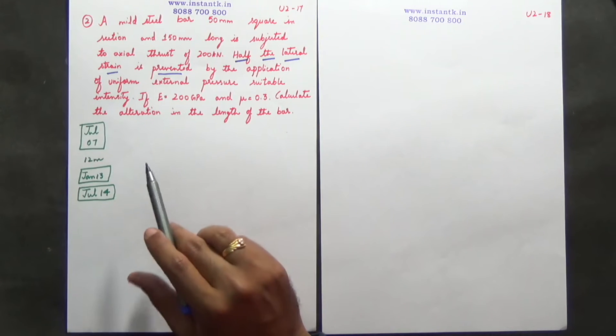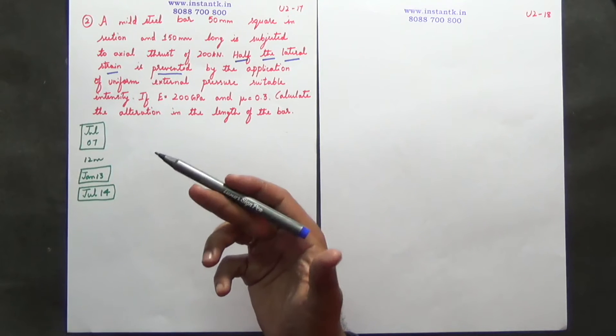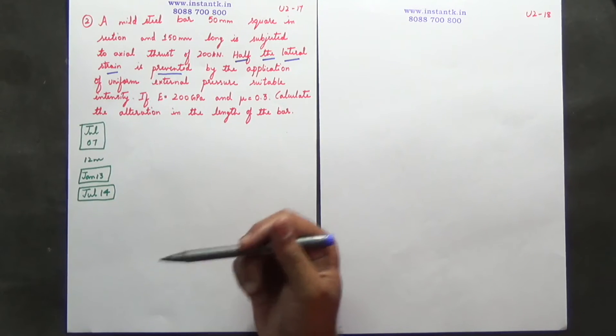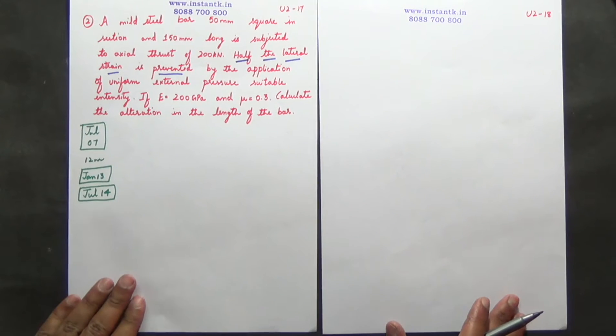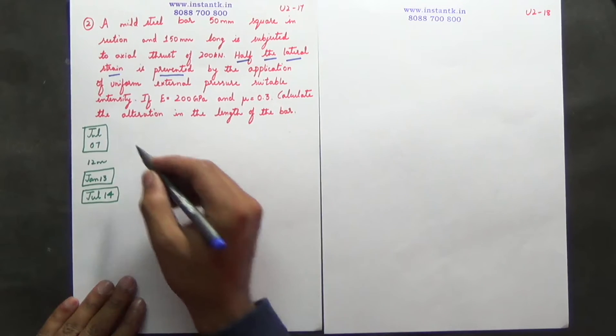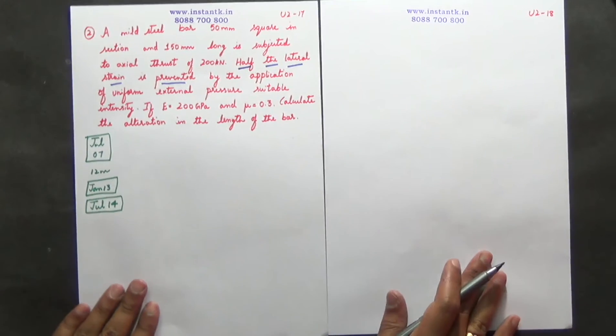If E is equal to 200 GPa and mu is equal to 0.3, calculate the alteration in the length of the bar. So the alteration in length of the bar is nothing but change in length of the bar, so delta L is to be found out.